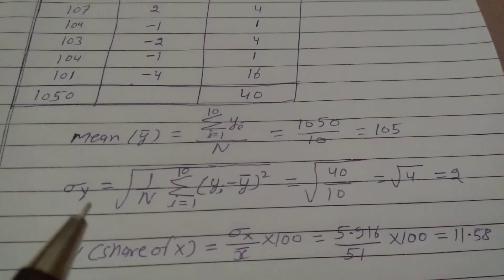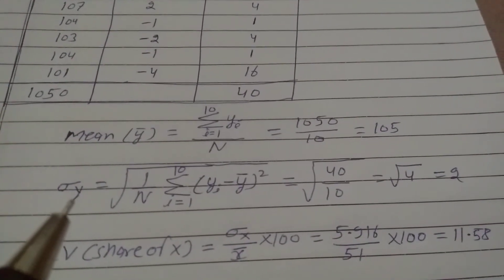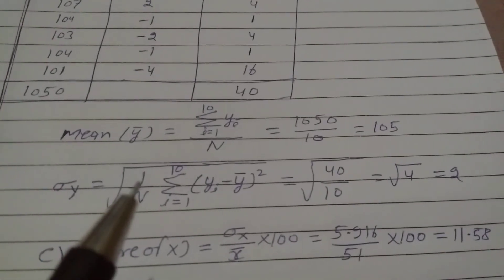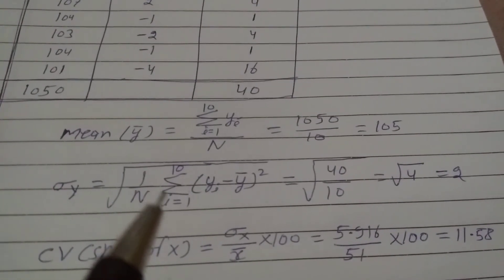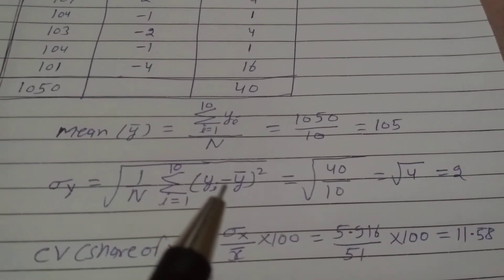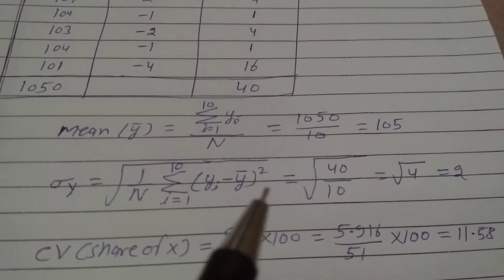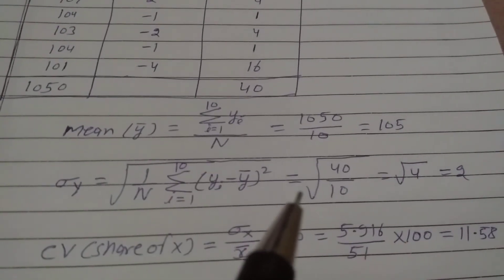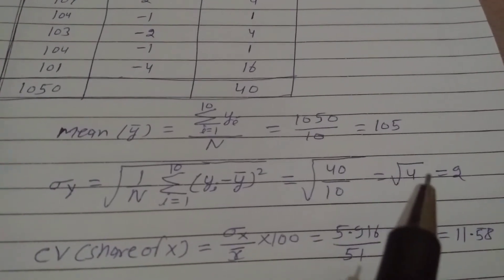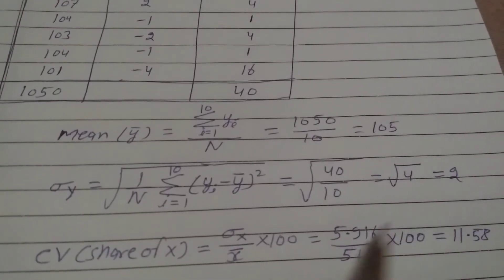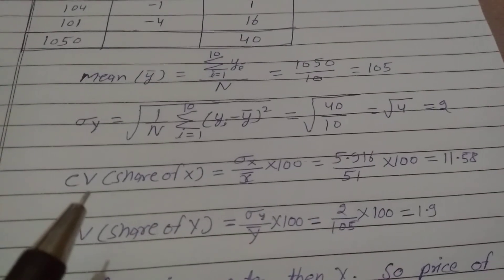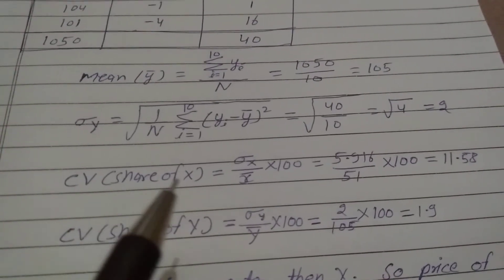Standard deviation of Y, sigma Y, equals root of 1 upon capital N, summation from i=1 to 10 of (Yi minus Y-bar) whole square. Putting in the values: equals root of 40 upon 10, equals root of 4, which equals 2.